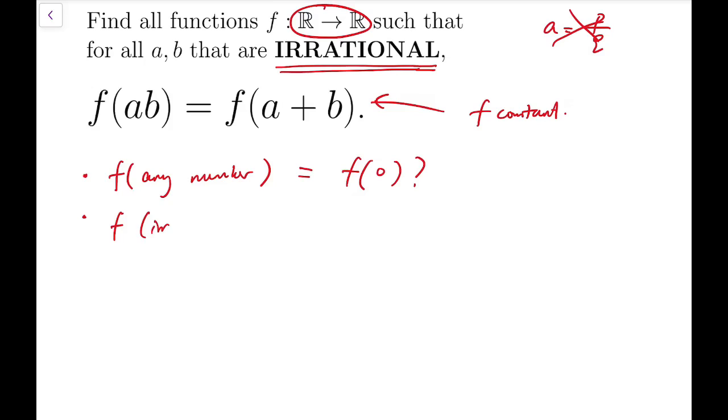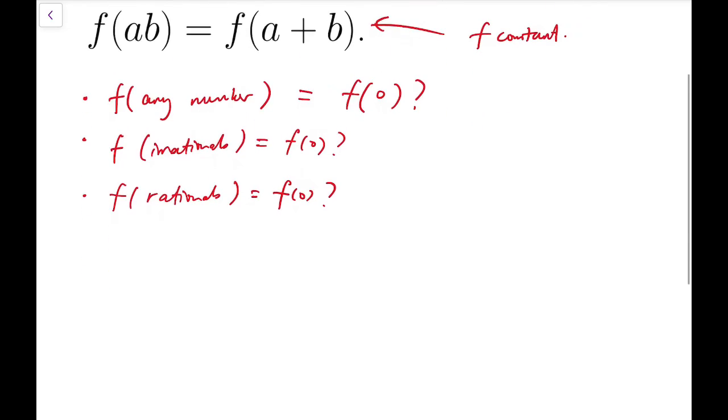So I'm going to divide this into two cases. The first case is that f of irrationals equals f of 0 and f of rationals. Because we could only put in irrational numbers into this equation, so it's very natural for us to separate into these two cases.